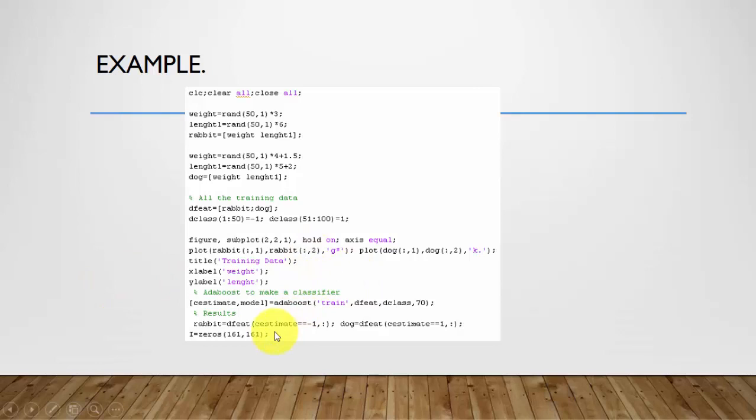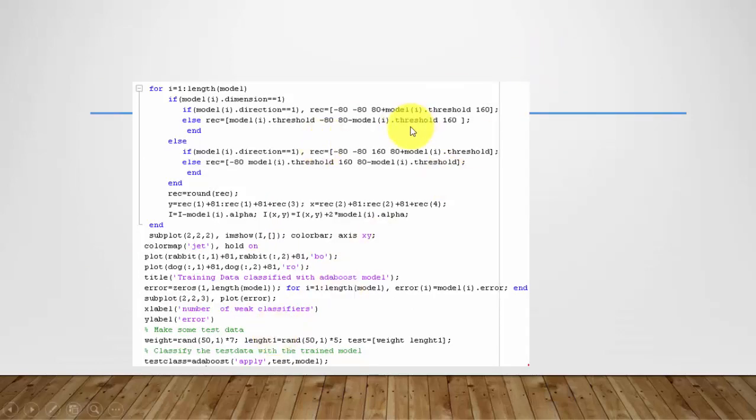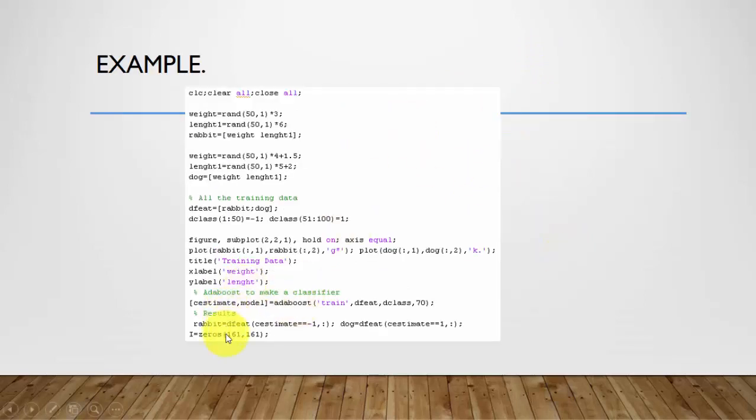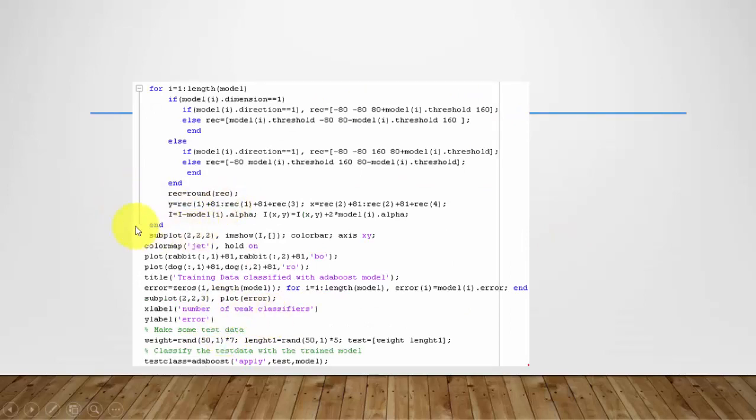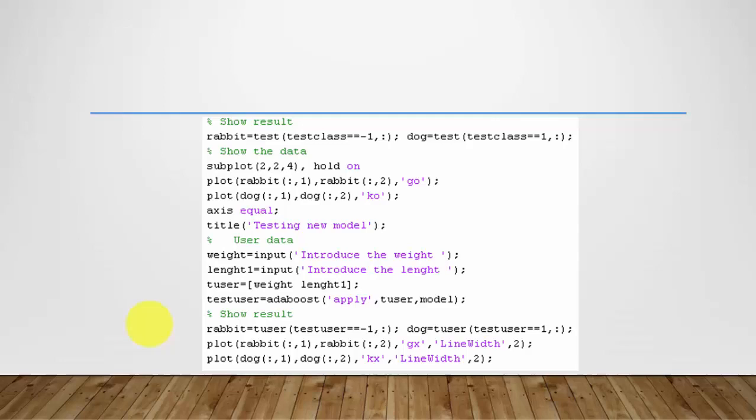And finally, we're gonna check the threshold with this algorithm, with this formula. Then we're gonna graph it in our graph. And finally, we're gonna train some new data with the same basis. We're gonna show the result here in the fourth graph. And something new here is that the user can write new data. For example, if I want to know about, I have the weight and the length of an animal, and I want to know if it's a rabbit or dog, I can also write it here in MATLAB. And I will know it.